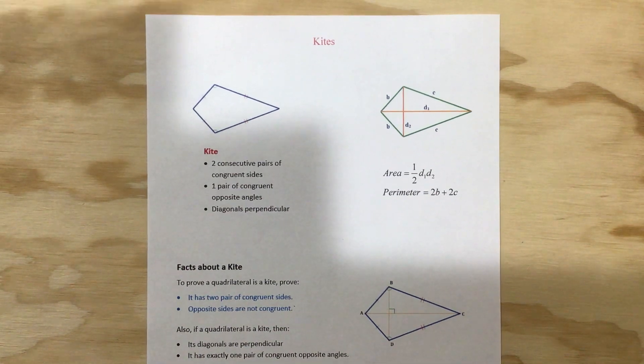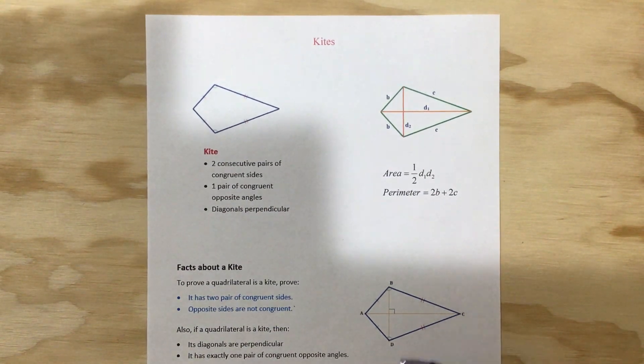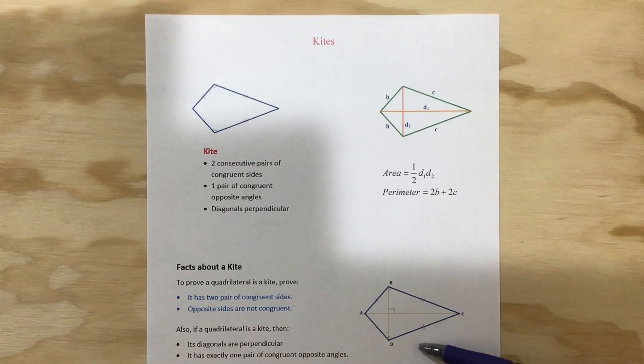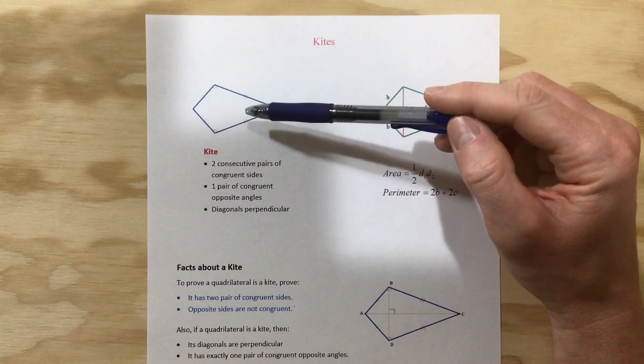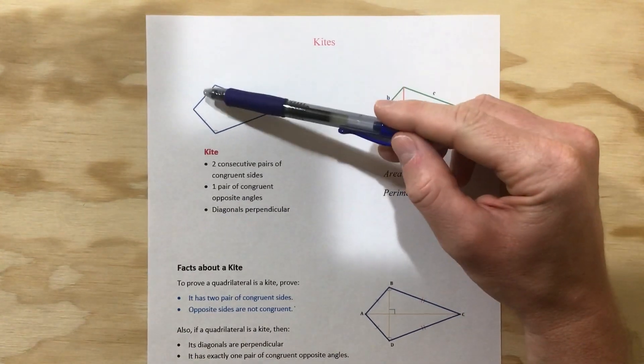Let's take a look at kites today. The best picture of a kite, probably the most clear one, is the one down here, but it is labeled up here — it's just not as dark.